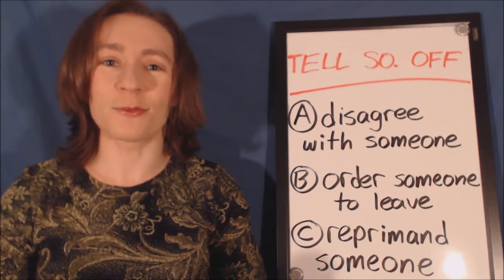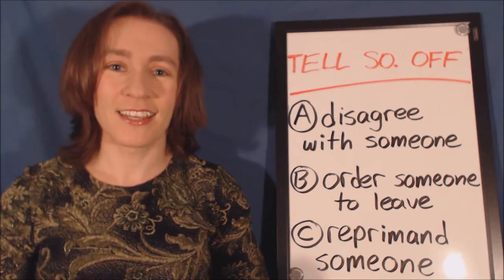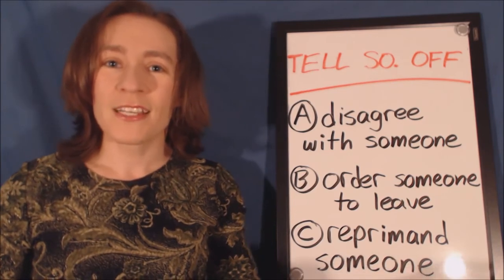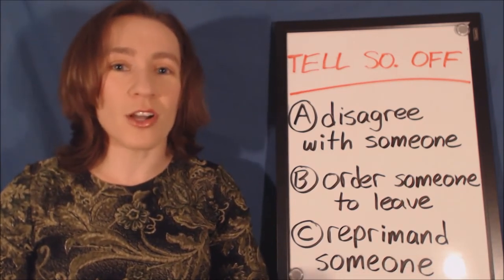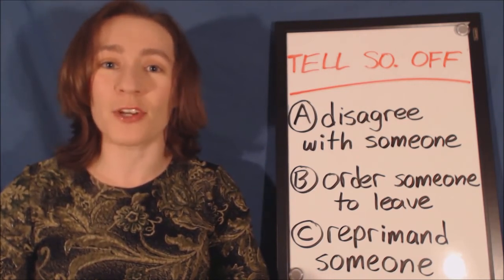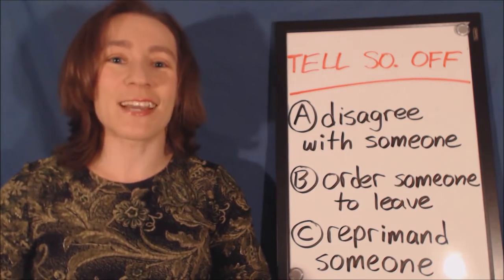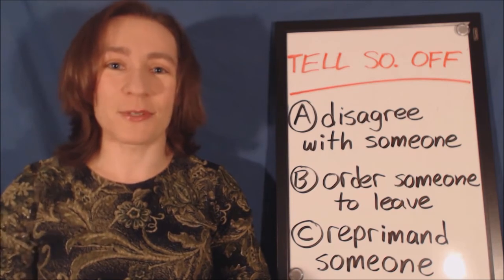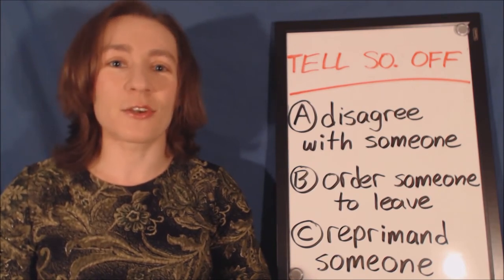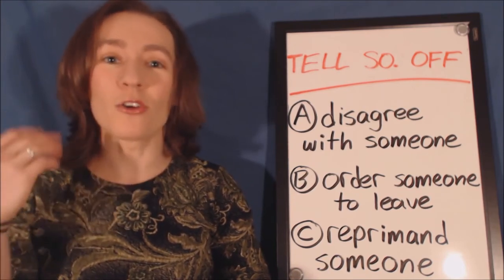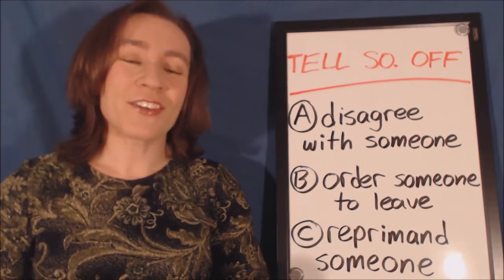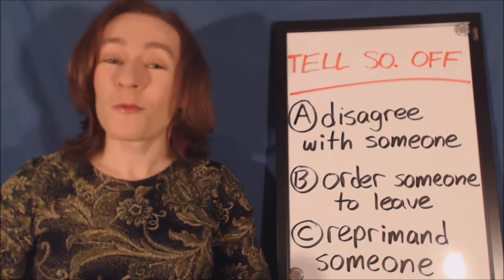Post your answer in the comments and I'll tell you what's correct. 'Tell someone off' means C — to reprimand someone. Reprimand means to speak strongly to someone when they did something bad, something wrong, or their behavior was unacceptable. In this example, the boyfriend arriving an hour late was unacceptable and inconsiderate — it hurt her feelings — so she told him off and made a whole bunch of strong comments about how bad his behavior was.